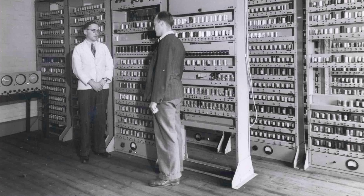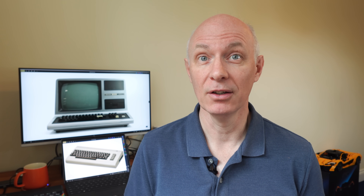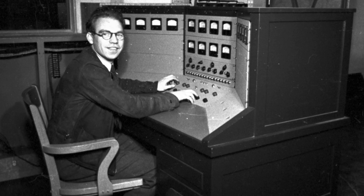The first computers had so little memory that the idea of a programming language made no sense. Computers were hand-coded with the zeros and ones of machine code. But as memory increased and programs got more complex, it became clear that an abstraction layer would make the job both faster and easier. Fortran was one of the first programming languages, developed by IBM in the 1950s. It was developed by John Backus, who said he developed it purely because he didn't like writing machine code and wanted to make his life easier.